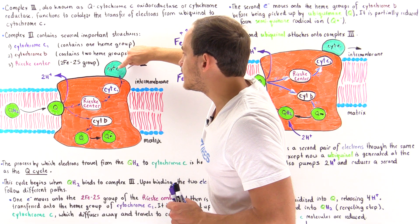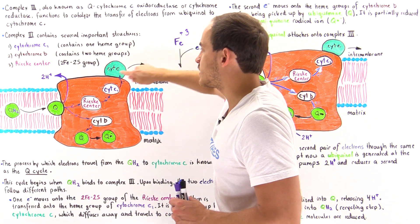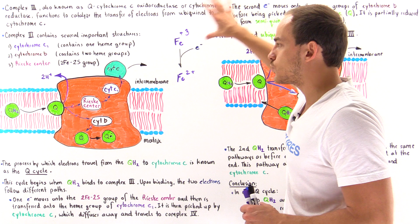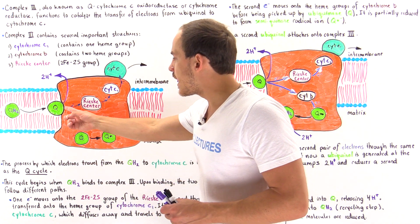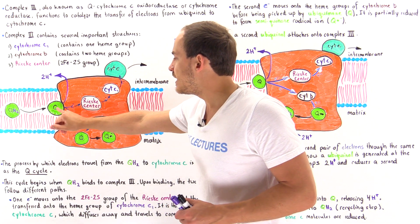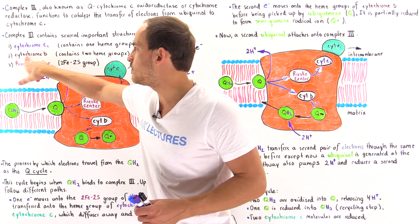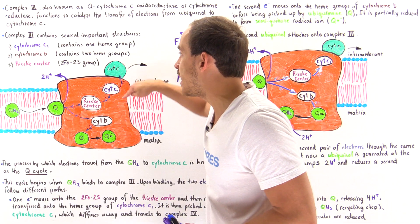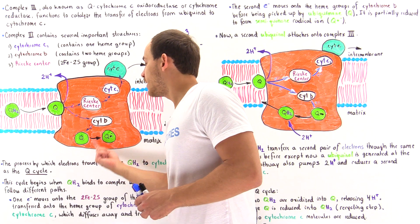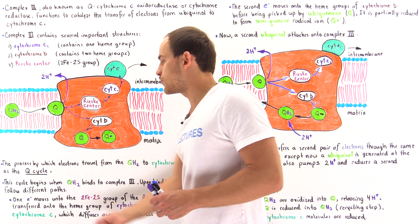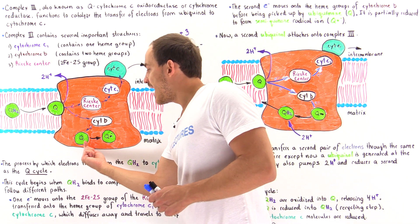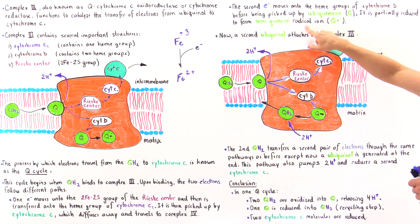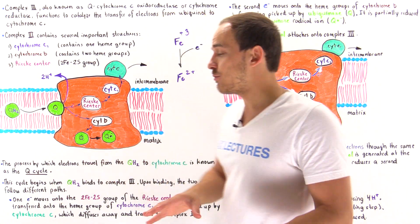Once the first electron binds onto the oxidized cytochrome C, it reduces it. The cytochrome C then detaches and diffuses through the fluid of the intermembrane space to bind onto complex four. The second electron, because it cannot follow the same pathway, moves via cytochrome B. Cytochrome B has two heme groups, and the electron moves first onto one heme group, then the second, and ultimately ends up on ubiquinone, partially reducing it into the semiquinone radical ion (Q•⁻).